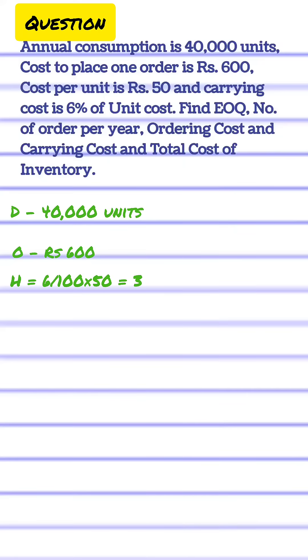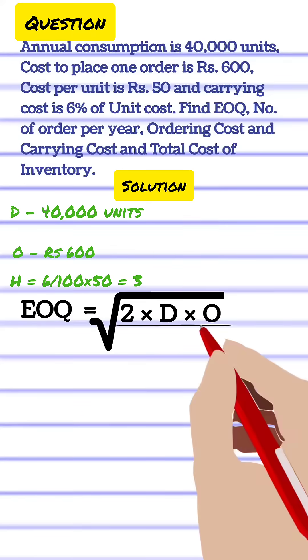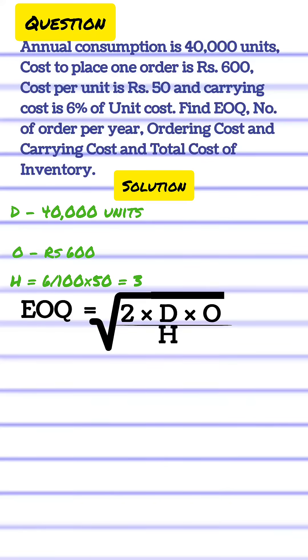6% of 50 rupees is 3 rupees. Putting the above values in the formula for economic order quantity works out to be as below.